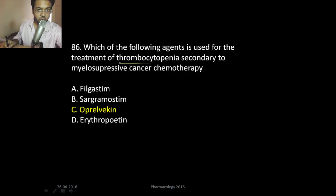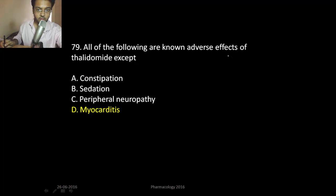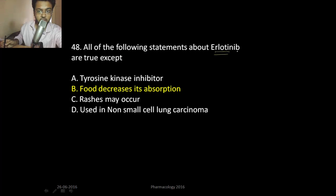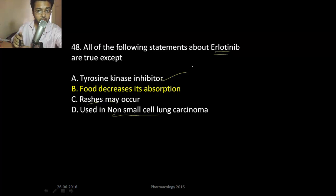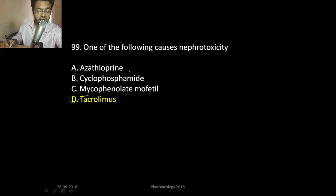MCQ review: Which agent is used for treatment of thrombocytopenia? Answer: oprelvekin. Filgrastim and sargramostim are used for elevation of WBC, not platelets. Amifostine is a radioprotector and cytoprotective drug. Adverse effects of thalidomide — it does not cause myocarditis and does not cause diarrhea; it causes constipation. Which of the following is false for erlotinib? Erlotinib is an EGFR inhibitor used in non-small cell lung carcinoma. It is a tyrosine kinase inhibitor and its absorption is not decreased by food — it is advisable to take erlotinib with food.